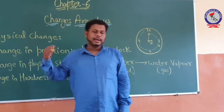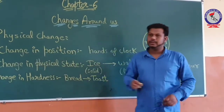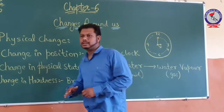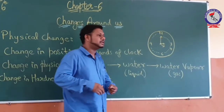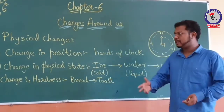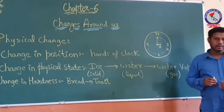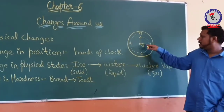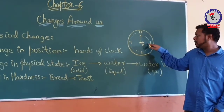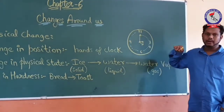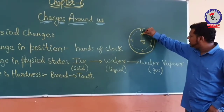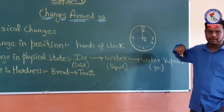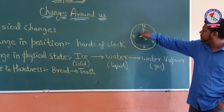Next, we will study change in position. Every object around us that is stationary does not change, but a moving item changes its position with respect to time. For example, on a clock at 3 pm, the hour hand is at 3 and the minute hand is at 12. After one hour, the minute hand will rotate and again come back to position 12.